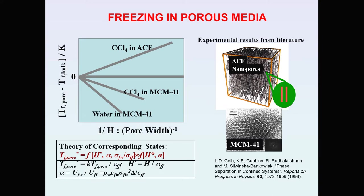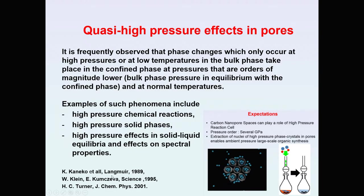We find that the temperature of melting of substances in porous matrices is quite different from the bulk system. We can observe an increase of the melting temperature in pores relative to the bulk, and we can also observe a decrease. This change is a function of the pore size. On the basis of the literature, it is now considered that the temperature of freezing in pores can be expressed by two variables: pore width and the alpha parameter, which is the ratio of the fluid-wall to fluid-fluid energy.